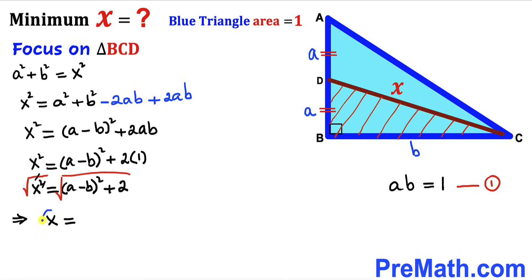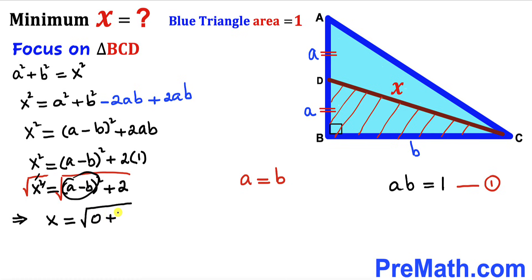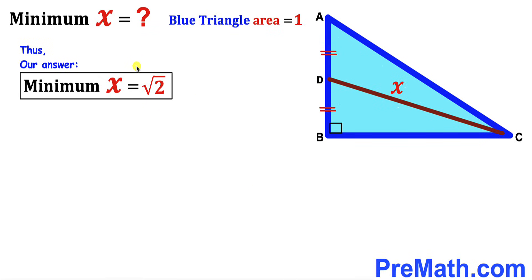To find the minimum value of x, the expression inside the square root must be minimized. The term (a minus b) squared is always non-negative, so its minimum is 0, achieved when a equals b. Therefore the minimum value of x is the square root of 0 plus 2, which is the square root of 2. Thus the minimum possible value of x equals the square root of 2, approximately 1.414 units. Thanks for watching — please don't forget to subscribe for more exciting videos!